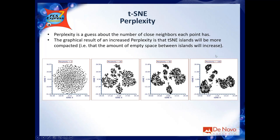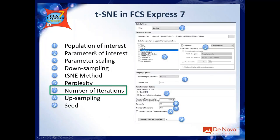Just for fun — a scenario you won't normally face — if the perplexity value matches the number of events, you get results similar to perplexity 2. For example, if you set perplexity to 50 and have only 50 events, you are effectively expecting one single island, which means no separation at all.